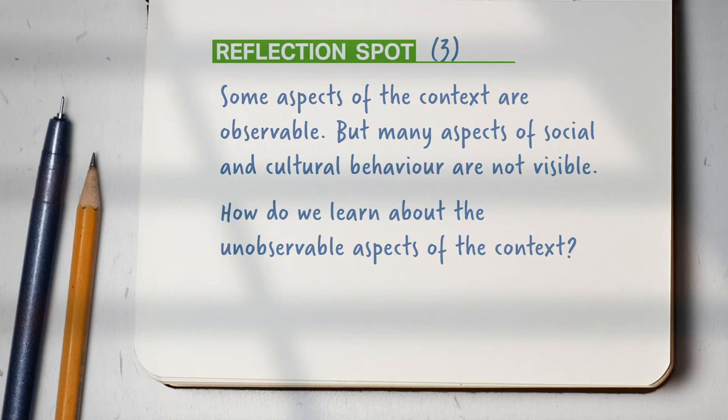Achal's work shows us the importance of being alert to the smallest details present in the immediate environments. But as we know, it is not only the immediate time and space that makes up the context in ethnography. It is just as important to learn about the social cultural context in which a phenomena occurs, and much of this lies beneath the surface. It is not quite visible or observable. How do we learn about this?